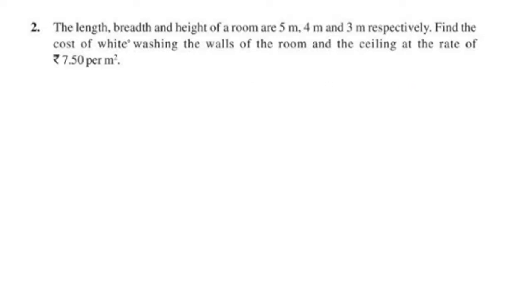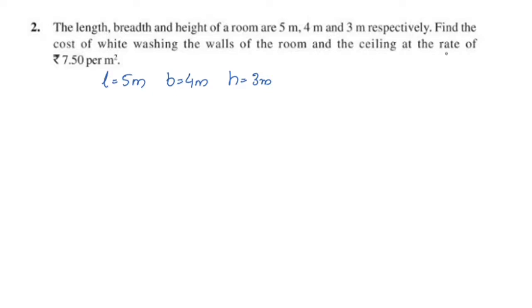The length, breadth, and height of a room are 5m, 4m, and 3m respectively. So length is equal to 5m, breadth is equal to 4m, height is equal to 3m. Find the cost of whitewashing the walls of the room and the ceiling at the rate of Rs. 7.50 per m².